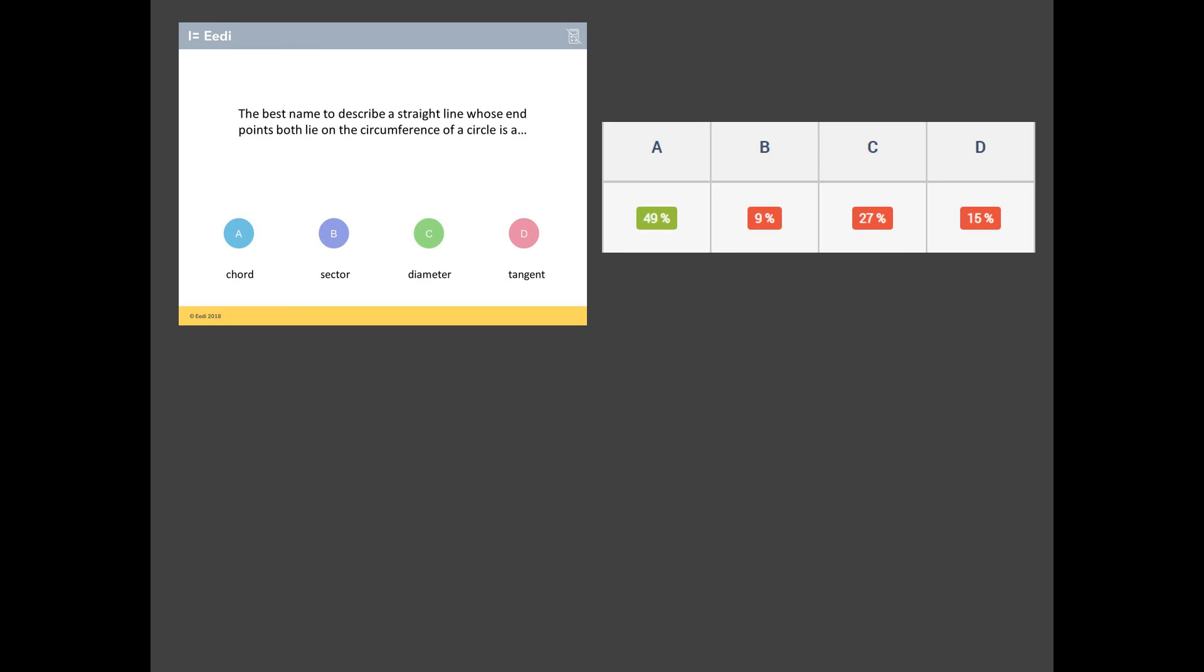Look at that. There are only 49% of students agreed with us on that. Less than half of students. The most popular choice of wrong answer is C. And again, no surprise there. A student going for the definition of a diameter without probably reading the question carefully enough.